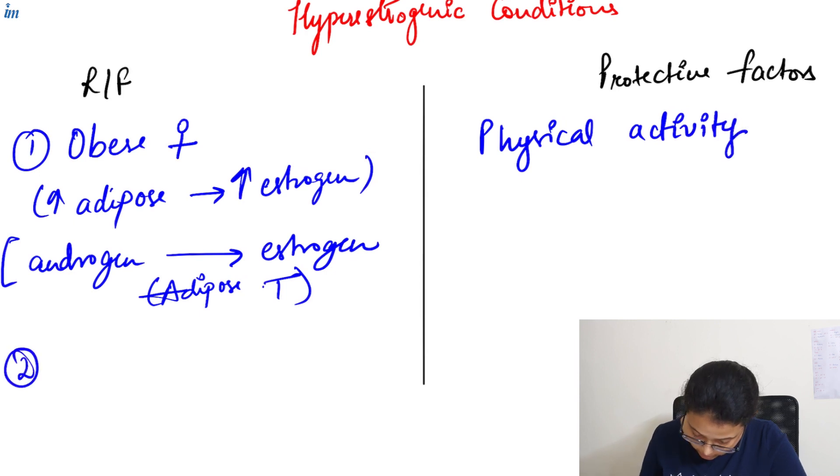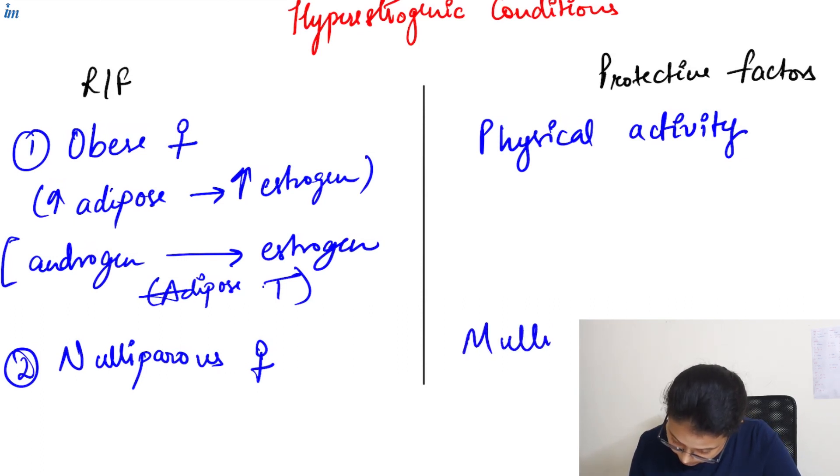Then, the next one is nulliparous females. Then, under protective factor, we have multiparity and pregnancy.